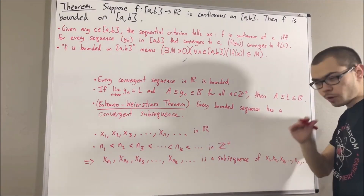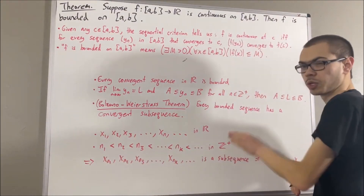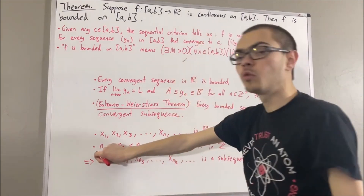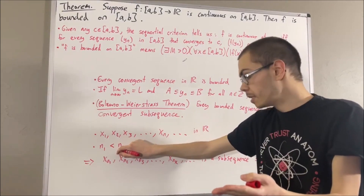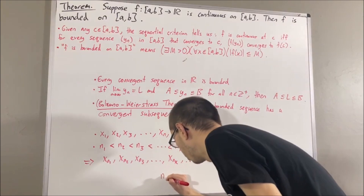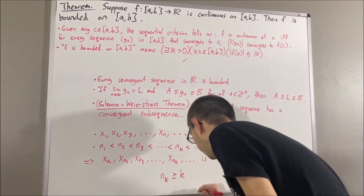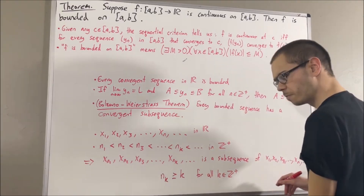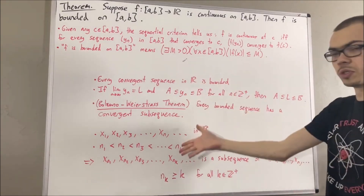A property regarding strictly increasing sequences of positive integers that we're going to be using in proving this theorem is: n1 is greater than or equal to 1, n2 is greater than or equal to 2, n3 is greater than or equal to 3, and so on. In general, we can prove by induction that nk is greater than or equal to k for all positive integers k. I'll link a video in the description below where we prove this and these results as well.